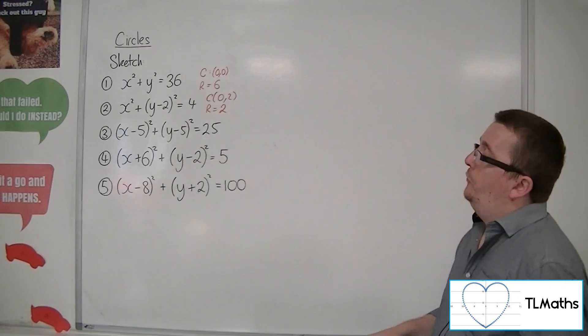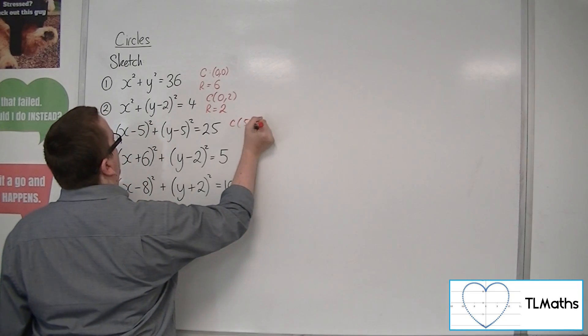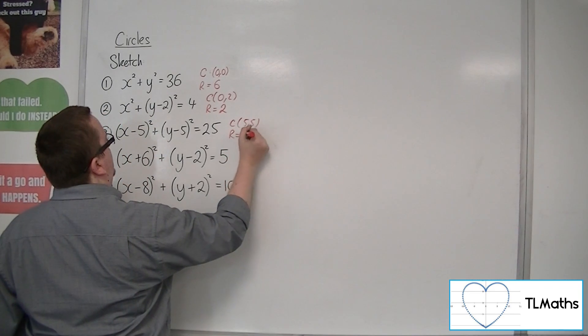Number 3, x minus 5 squared plus y minus 5 squared equals 25. So this would add a centre at 5, 5, and a radius equal to 5.